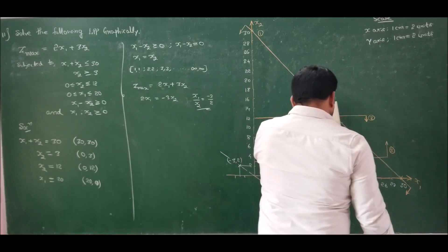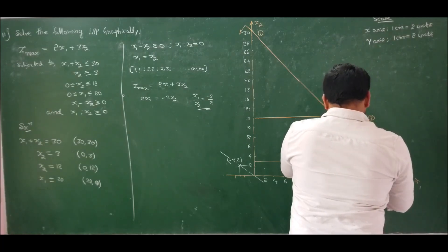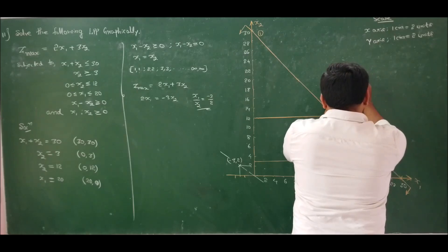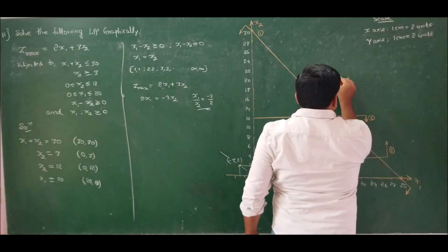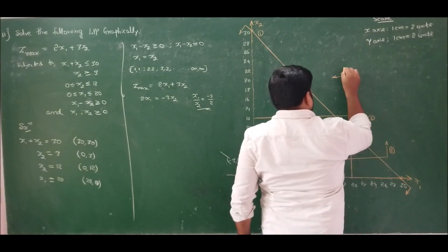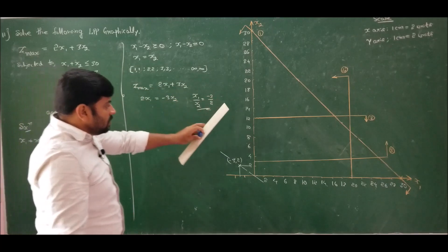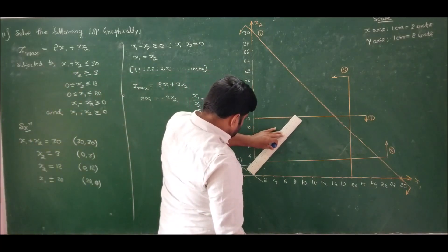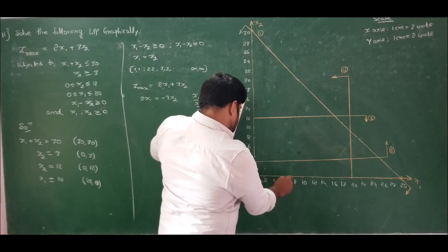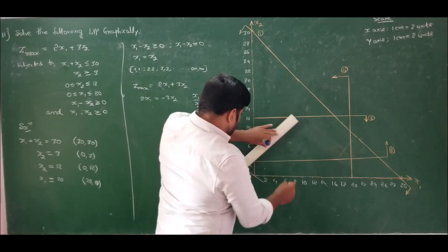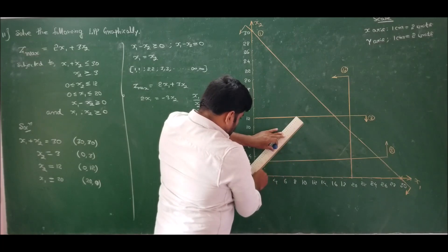The fourth constraint: x1 = 20. Draw a vertical line at x1 = 20. Since it is less than or equal to 20, this should move toward the left. This is our fourth constraint. For the fifth constraint, x1 - x2 = 0 means x1 = x2, so draw a line at 45 degrees through points (6,6), (8,8), continuing to infinity.